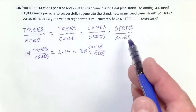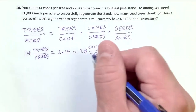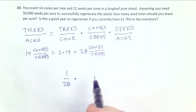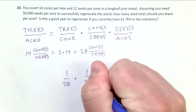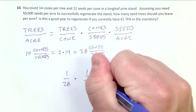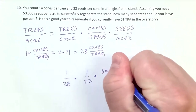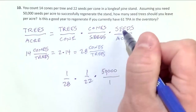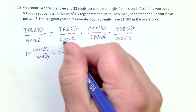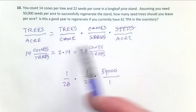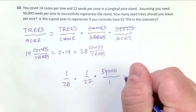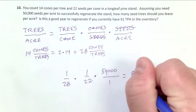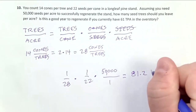Now looking at the full equation: trees per cone is 1 over 28, cones per seed is 1 over 22, and seeds per acre is 50,000 over 1. Seeds and seeds cancel out, cones and cones cancel out, and we're left with trees per acre. When we do this math, that equals 81.2 trees per acre.